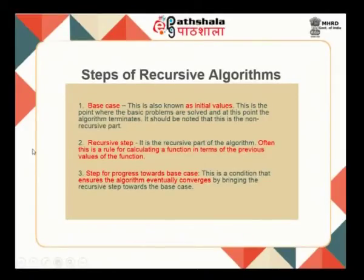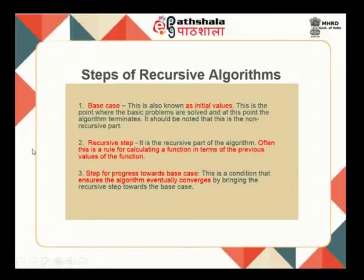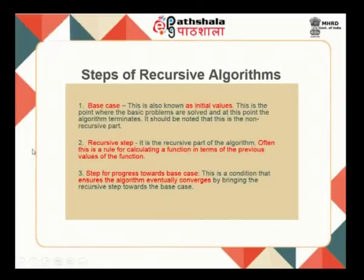In any recursive algorithm, three steps must be present. First is the base case — the initial value where variables are initialized. Second is the recursive step, which conditionally calls itself, computing the function's value in terms of previous values. Third is progress toward the base case, required to ensure the algorithm converges. For example, factorial of n is a recursive function: n! = n × (n−1)!. In the same manner, recursive functions can be written.